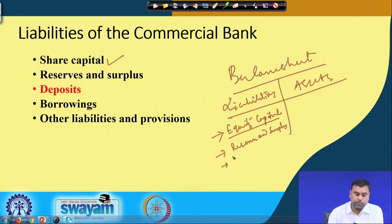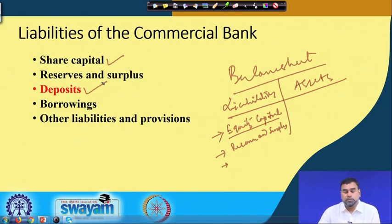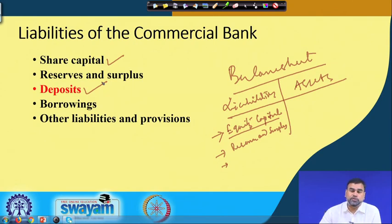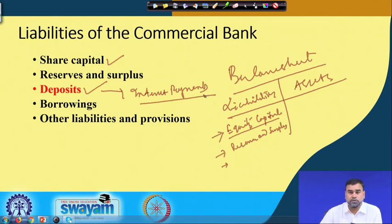Then we have another liability — deposits. Deposits are basically the major component, one of the most important components in terms of liabilities when discussing banks. For the people, household sector, or business sector who make deposits, deposits are assets for them — but deposits are a liability for banks. Why? Because the bank has to pay interest against the deposits. Any type of deposit, although it is the major resource for the bank's operations, is still considered a liability because the bank must pay interest against those deposits.